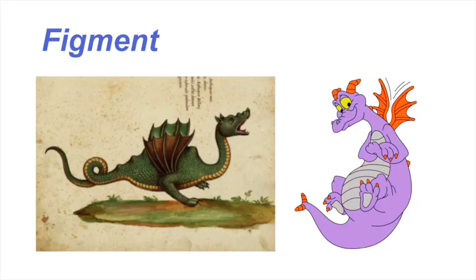Here are a few of my favorite animal caricatures. Figment is a character from the Epcot side of Disney that's modeled off of a medieval dragon. Notice how the belly is offset by the teeny tiny wings — good design and true to the original source.